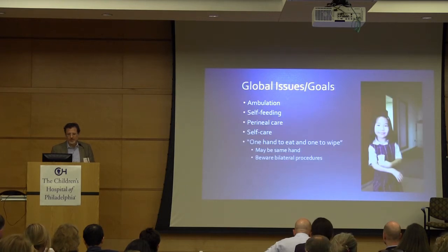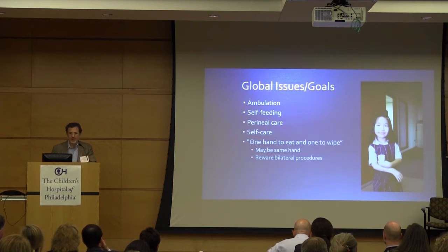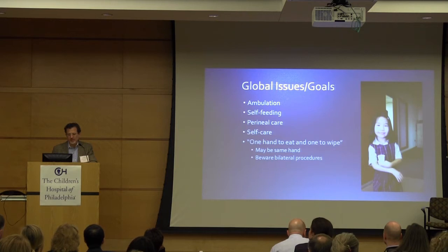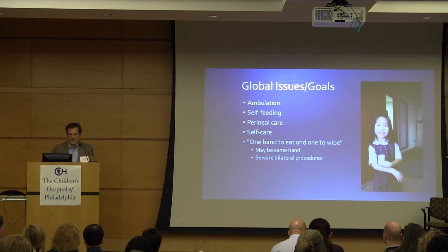Global issues — I apologize the video isn't playing. Ambulation, self-feeding, peroneal care, self-care. And I attribute this to Marybeth: one hand to eat, one hand to wipe, and it may be the same hand. So we're very careful about bilateral procedures in these children, to make sure that they have ideally some overlap with the hands, but also, if necessary, some divergence. Both of those are important because one hand to eat, one hand to wipe.